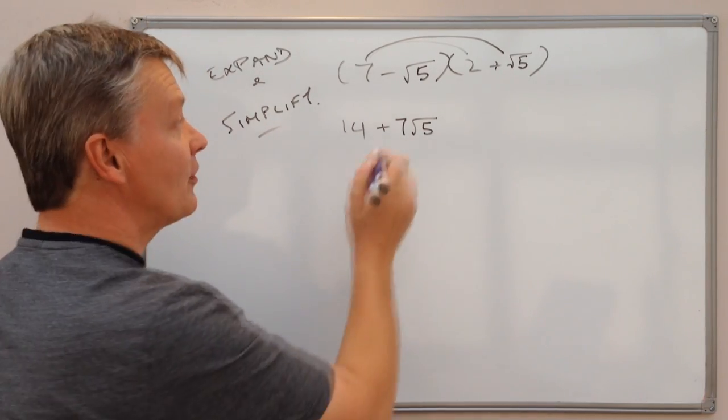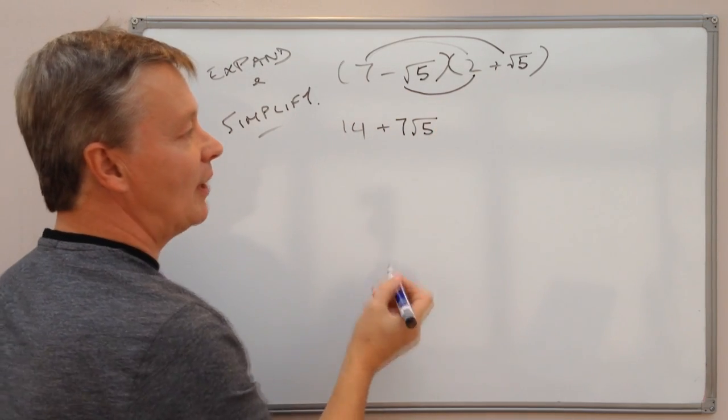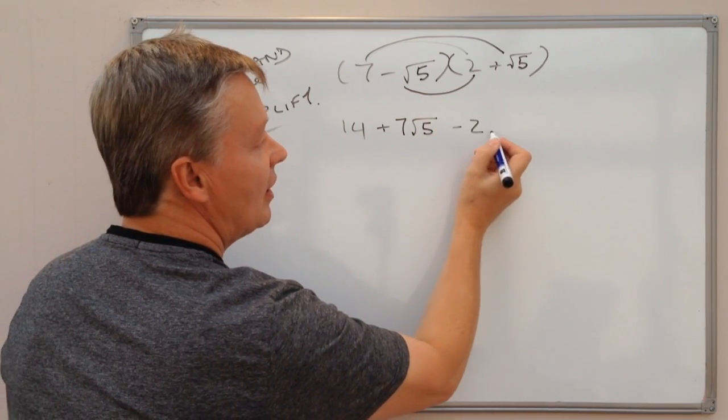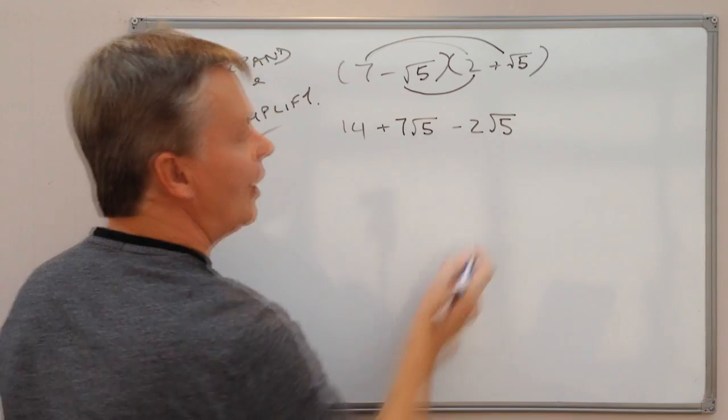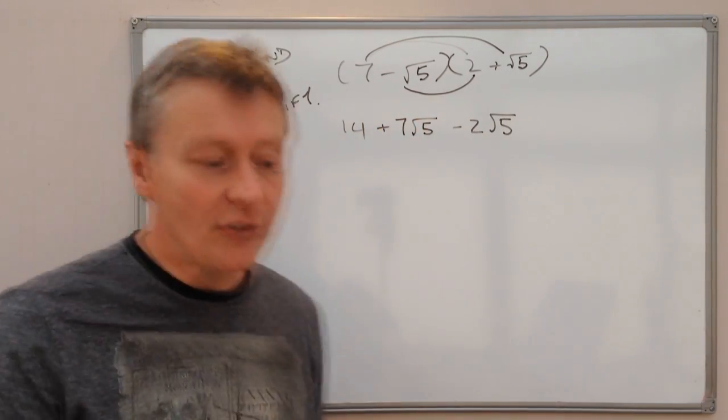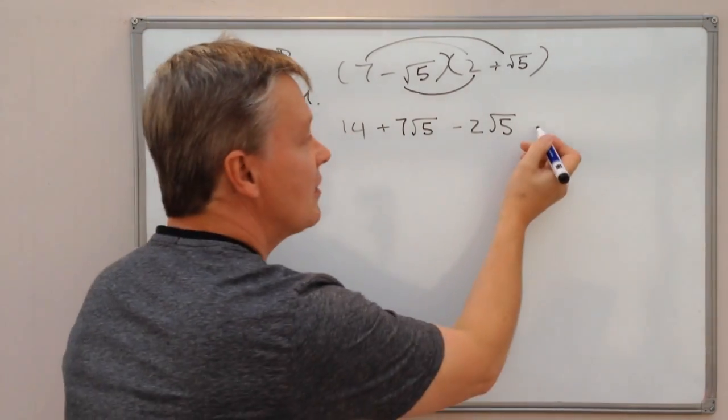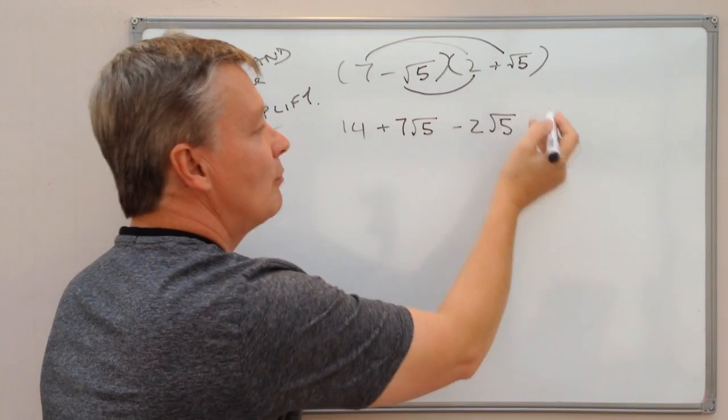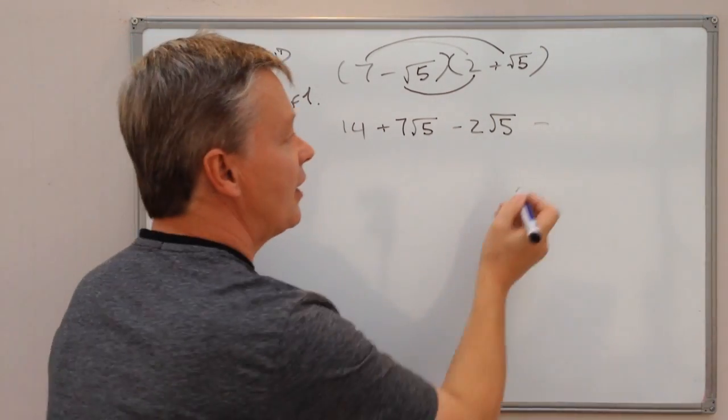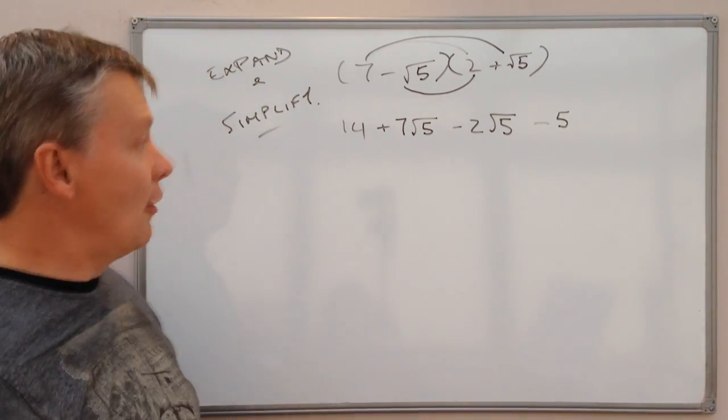So what I've dealt with now is that term multiplied by those two. So I'm going to do exactly the same with the second term which is this one and I've got minus root 5 multiplied by 2 is going to give me minus 2 root 5 and then I've also got minus root 5 times positive root 5, well a minus times positive is a minus and also a root number multiplied by the same root number is going to give me the whole number which is minus 5.